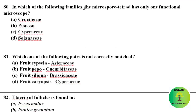In which family does the microspore tetrad have only one functional microspore? In this condition, only one microspore in the tetrad is functional and the remaining three degrade. This happens in family Cyperaceae.